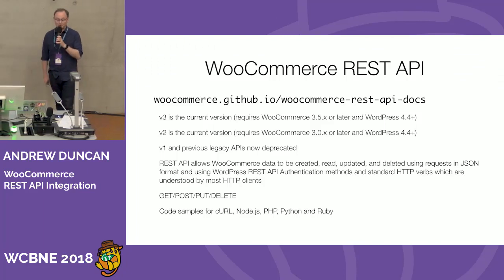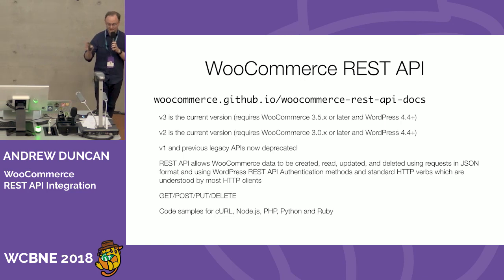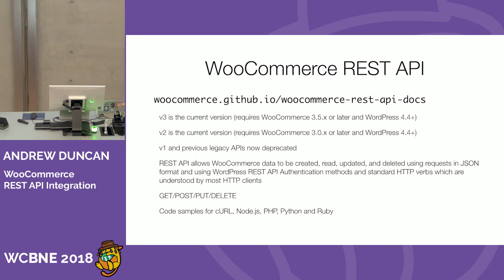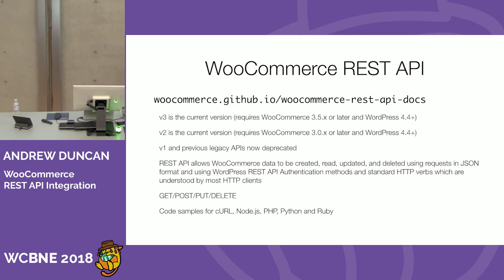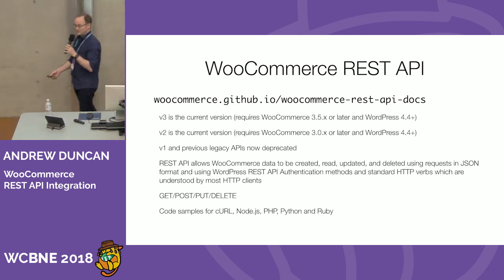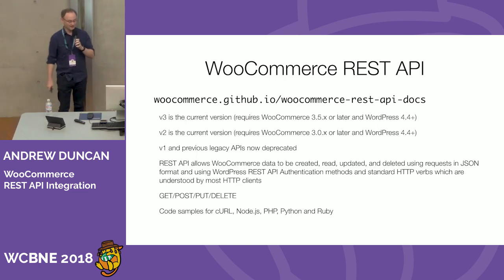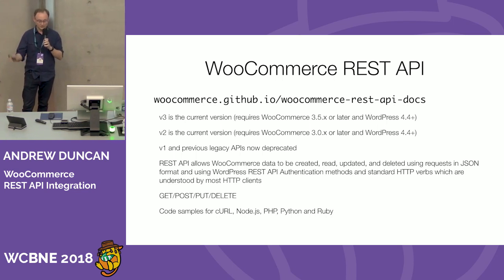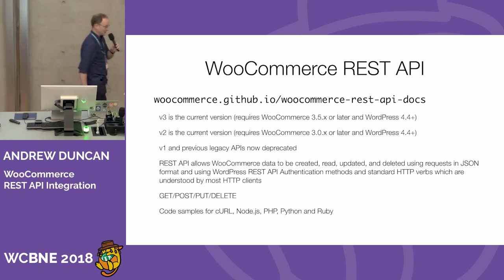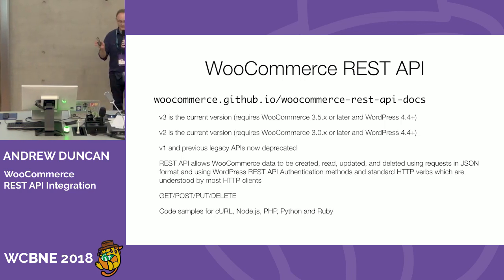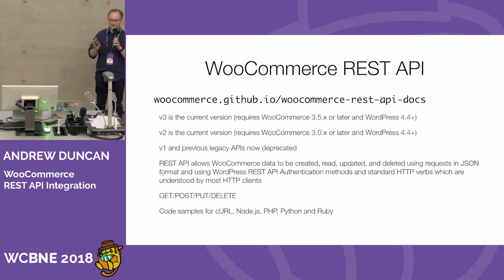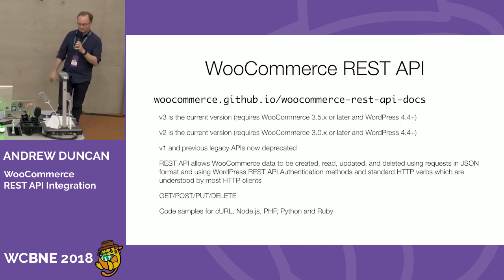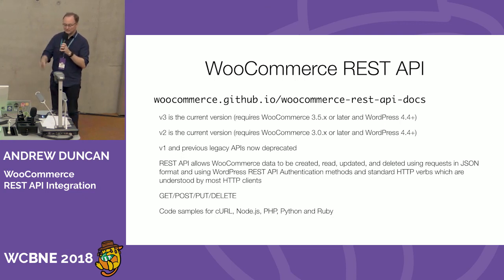Let's get into the details of the WooCommerce API itself. It's a very well-documented API. This week was exciting because WooCommerce 3.5 released version 3 of the API. There are currently three versions: version 1 was for WooCommerce 2, version 2 was for WooCommerce 3, and version 3 just came out for WooCommerce 3.5. You get all three versions installed and enabled without having to install anything extra. Versions 1 and 2 will eventually be deprecated, so any development you do today should use version 3.